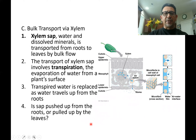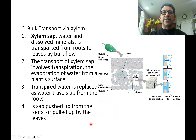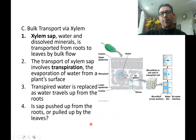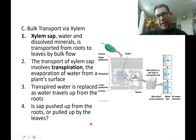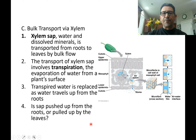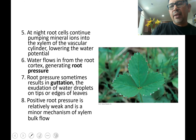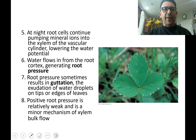So, is xylem sap pushed or pulled? By now you should have a good idea that xylem sap is pulled up through the plant because transpiration causes water to escape out of the leaf, and that escaping water pulls more water up through the various tissues of the plant — specifically through the xylem vessels and tracheids.